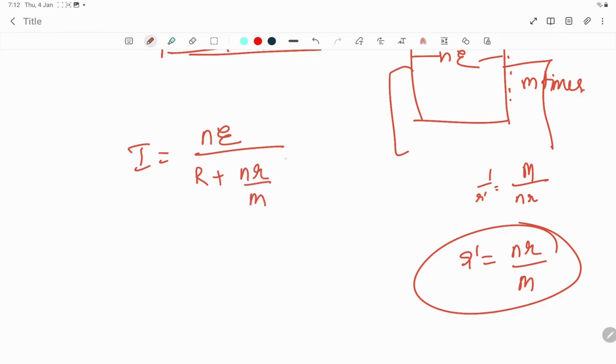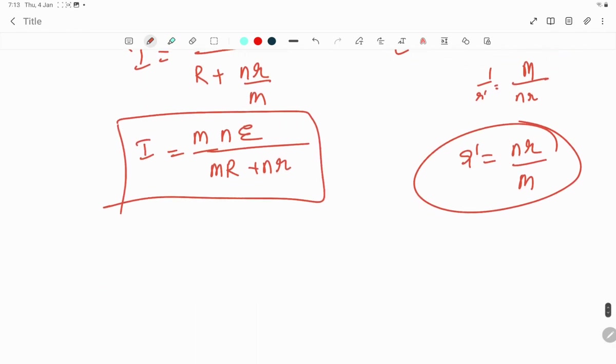Substituting this we get I = nε divided by mR + nr/m. Simplifying, bringing m to the numerator, we get I = mnε/(mR + nr).